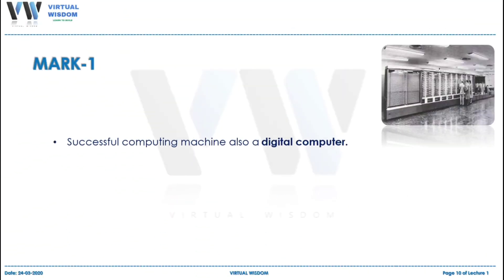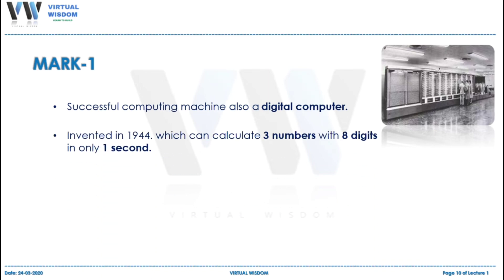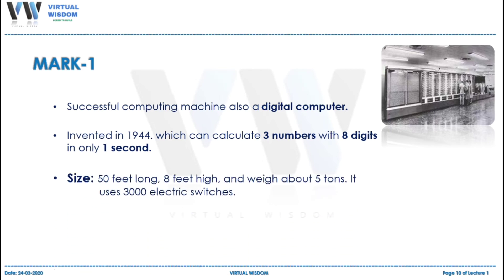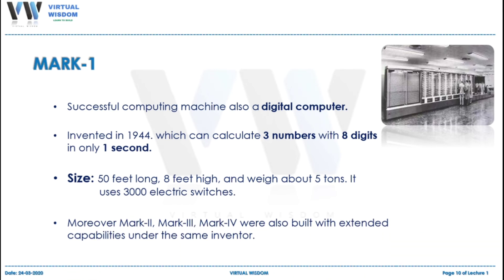After all of these inventions, a computer was introduced known as Mark 1. It was a successful computing machine and was a digital computer. It was invented in 1944, and had the ability to calculate three numbers with eight or fewer digits in only one second or less. It was 50 feet long, eight feet high, and had a weight of five tons. It also used 3000 electric switches. After Mark 1's success, Mark 2, Mark 3, and Mark 4 were introduced with extended capabilities under the same inventor.